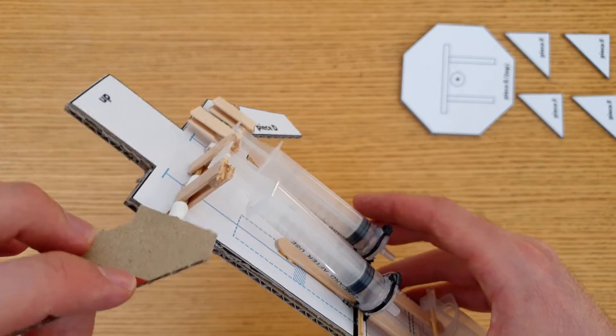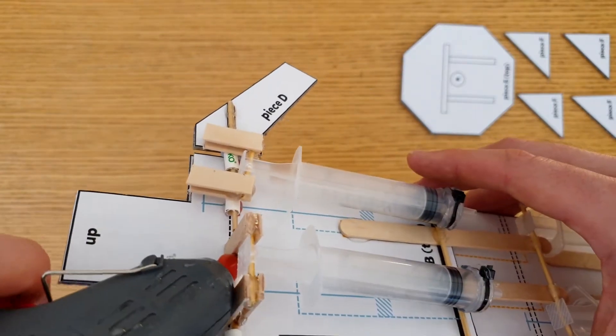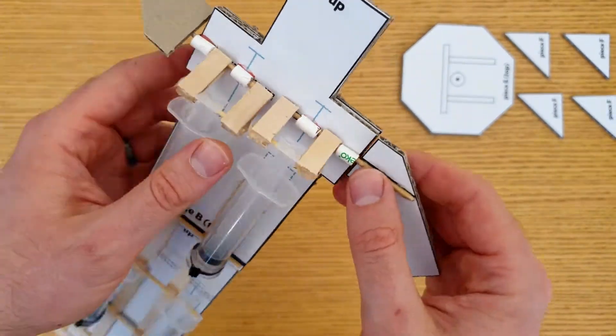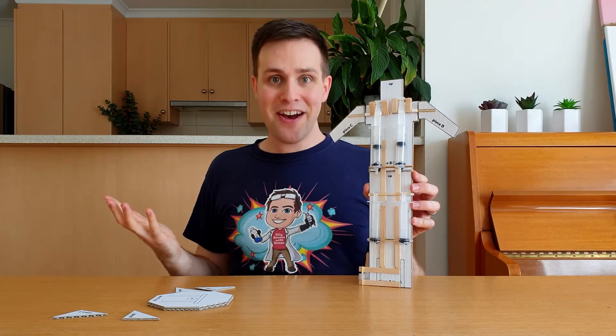So not like this, but like this. Add a bit of hot glue here and here to hold them in place. And repeat this on the other side. This is what you should have so far. You're doing well, let's keep going.